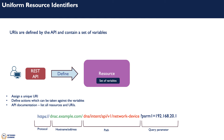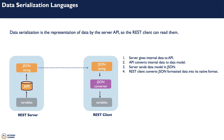This URI is used for a GET request, so the client would send a request and get data and variables back. But how is the set of variables presented back to the client by the server? When data is returned to the client, it must be presented in a format the client can understand and work with — and this is what serialization does. The server gives internal data to the API; the API does the translation or representation of this data. In this example, the server sends the data model in JSON, and the REST client converts the JSON-formatted data into its native format.